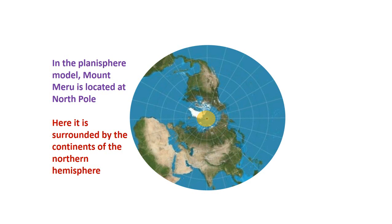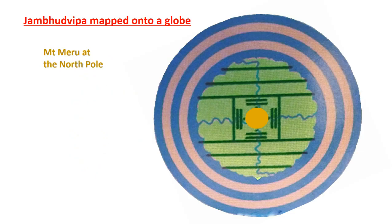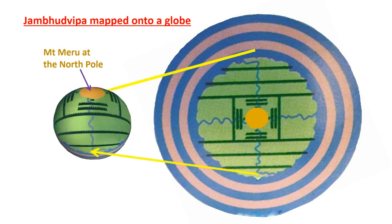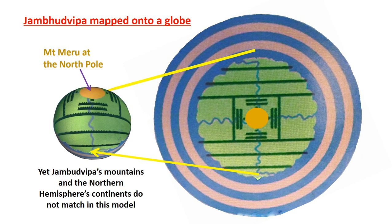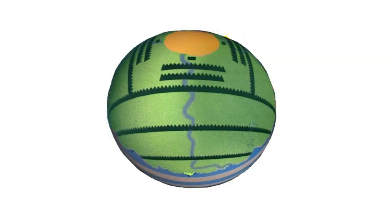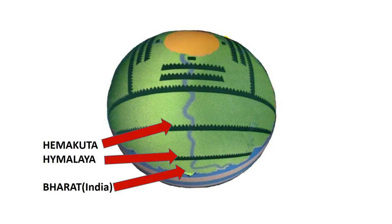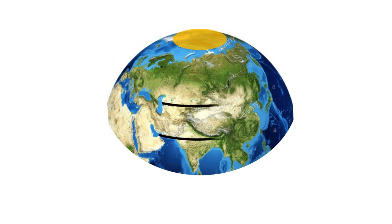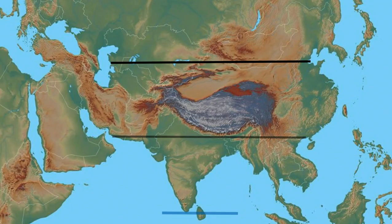In the planisphere model, Mount Meru is located at the North Pole, surrounded by continents of the Northern Hemisphere. We're going to map Jambudvipa onto a globe, because Mount Meru in this model is stationed at the North Pole. However, Jambudvipa's mountains in the Northern Hemisphere of the earth's continents don't seem to match this model. Let's take a different angle — placing the lines for Bharat, which is India, the Himalaya mountains, and the Hemakuta line. This is the Northern Hemisphere of the earth, and the Himalayas are similar to that pattern, including below it the peninsula of India.